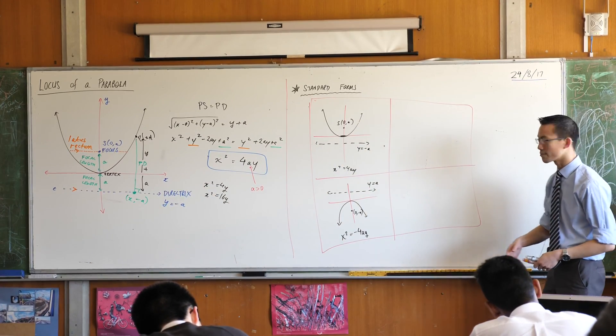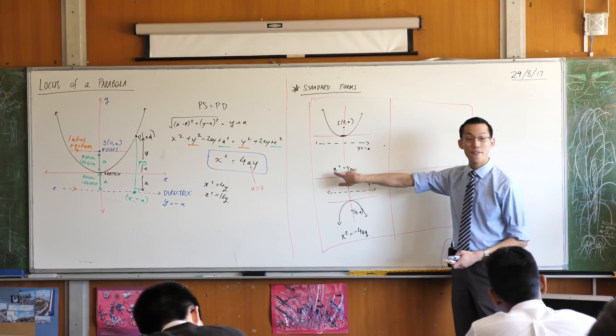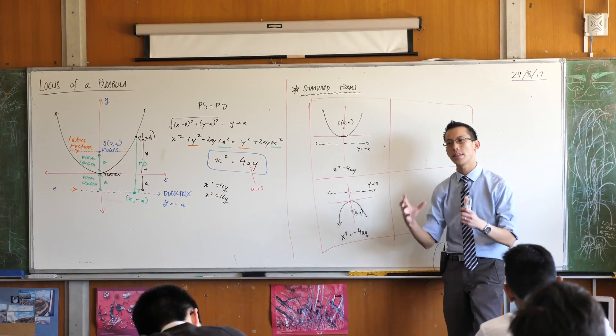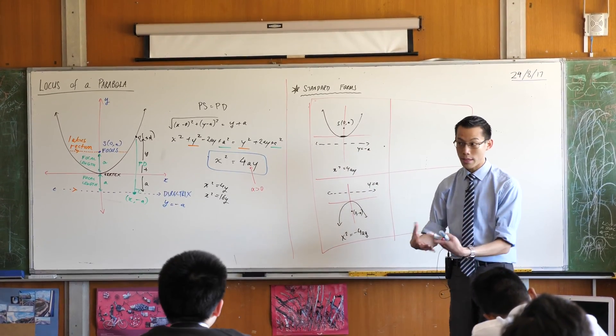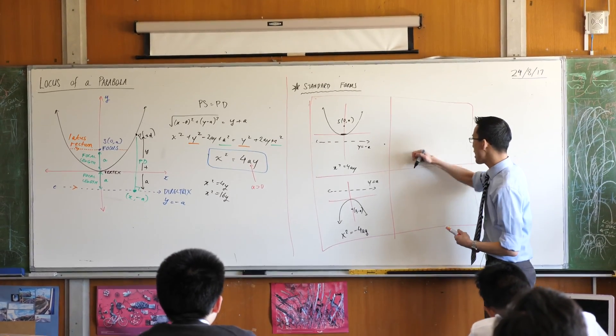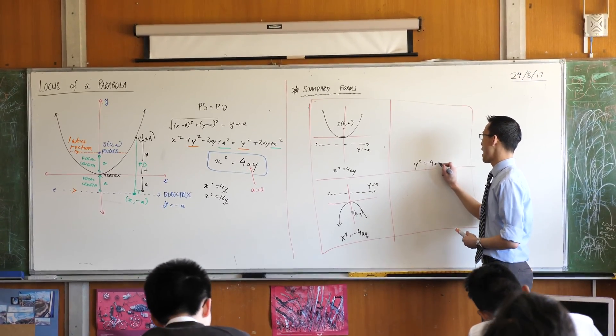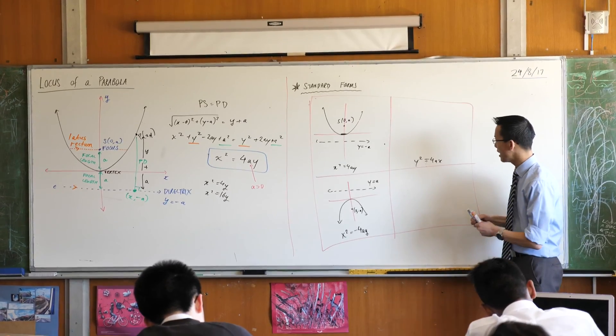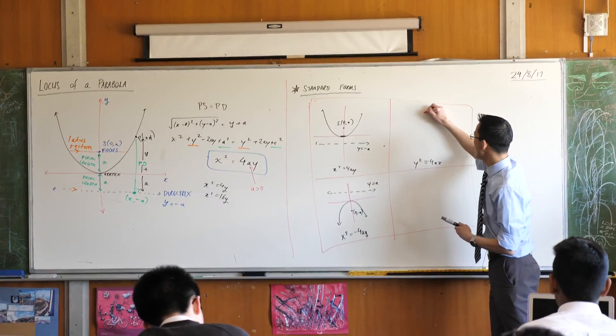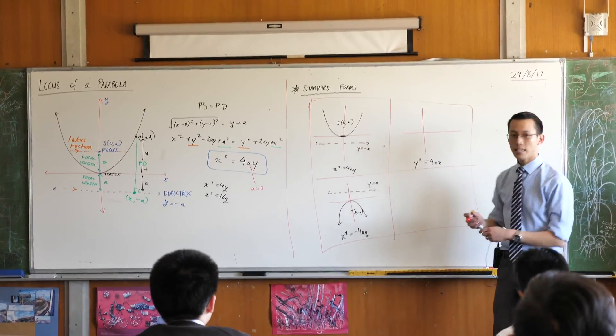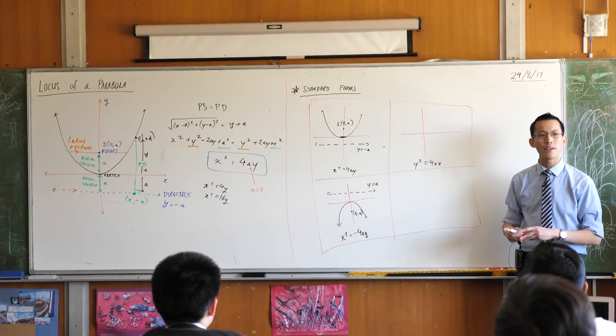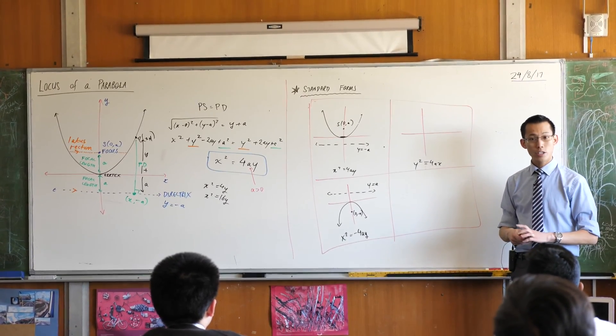Yeah, Eric? If I swapped my variables, I'm swapping what we think of as horizontal with what we think of as vertical. So if I said y squared equals 4ax instead of the other way around, then when you draw this, is this one going to be concave left or concave right?